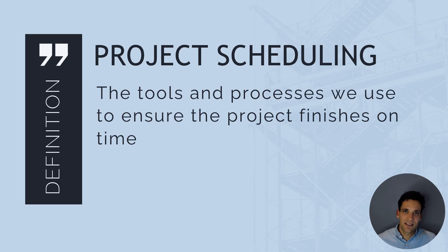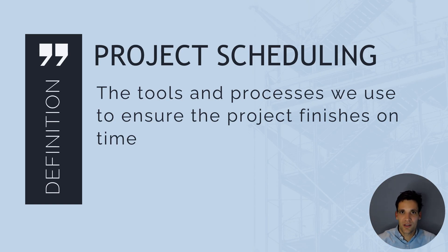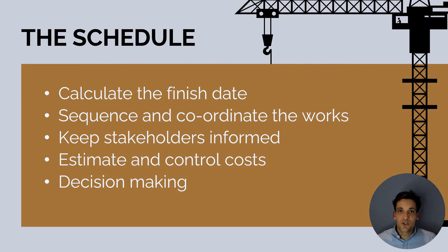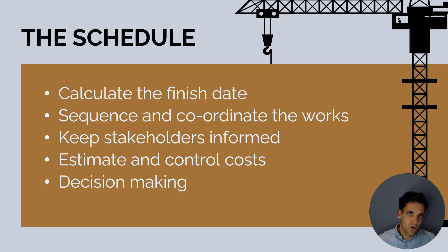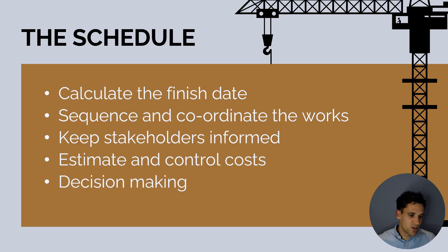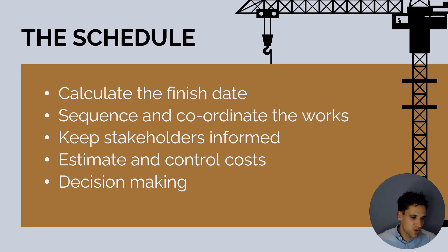The allowable duration for the project consists of tools like developing schedules, implementing a schedule, and monitoring and controlling the schedule. The schedule is the tool we use to do this — it helps us calculate the duration of the project. When we develop a schedule, we work out how long the project is going to take to complete. Once that project duration is fixed, it helps us sequence and coordinate the works to make sure activities occur on the dates they're planned to.